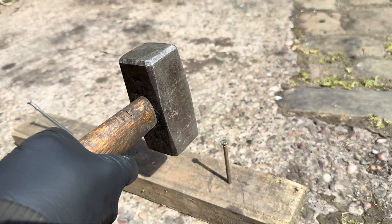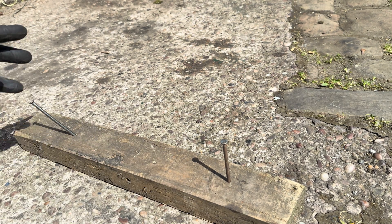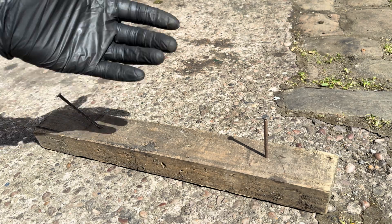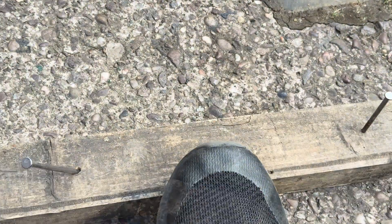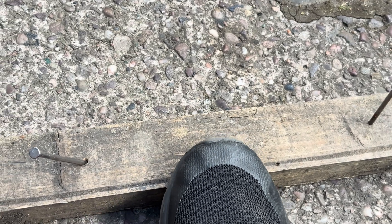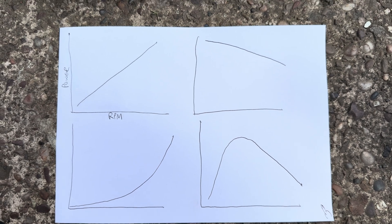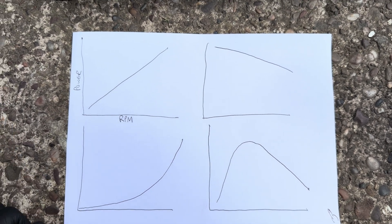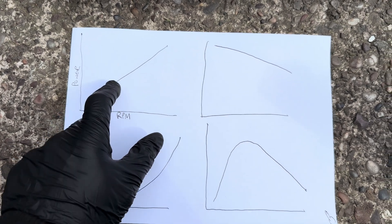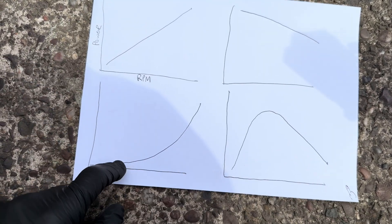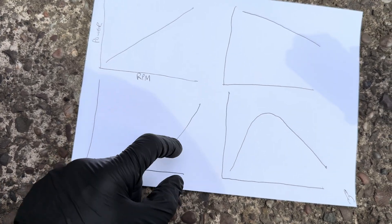Then you get into power versus torque on a dyno — usable power and what have you. This is a very crudely drawn bunch of dyno graphs of different engine types. This one is very linear with a pretty much flat torque curve all the way up. This one is like a sports bike — nothing, nothing, nothing, and then it comes into life and gives you everything.